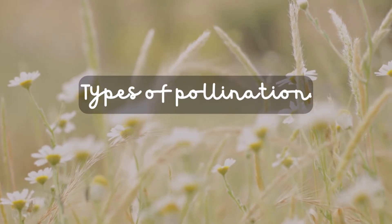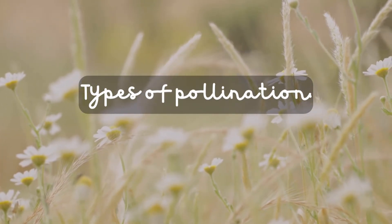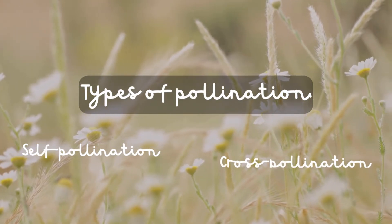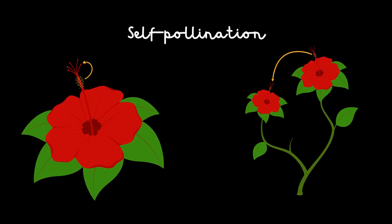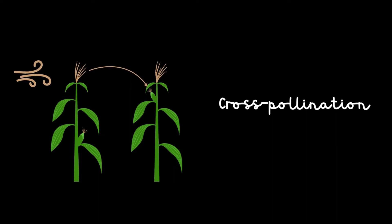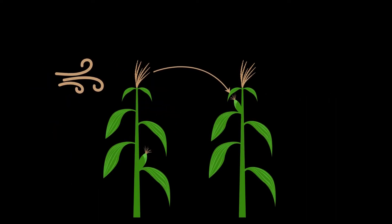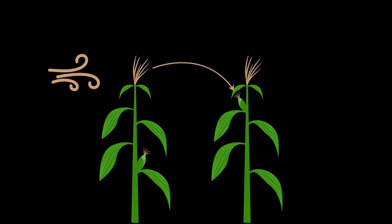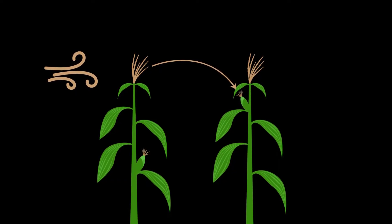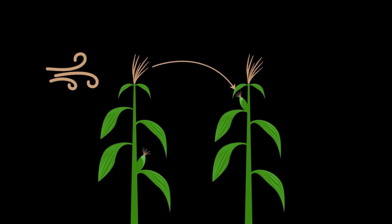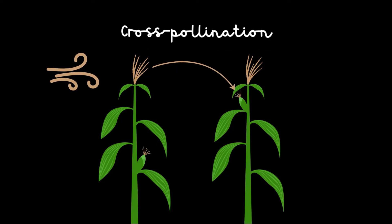Types of pollination. Pollination is of two types: self-pollination and cross-pollination. Self-pollination: when the pollen grains from the anther of one flower fall on the stigma of the same flower, or of another flower present on the same plant, the process is called self-pollination. Cross-pollination: when the pollen grains from the anther of one flower are transferred to the stigma of another flower present on a different plant of the same kind, the process is called cross-pollination.